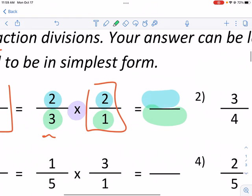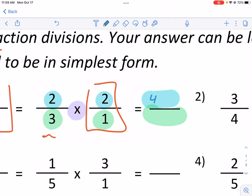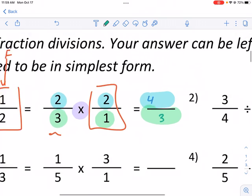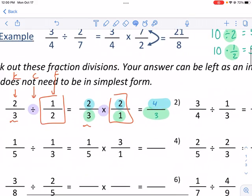So what that becomes is 2 times 2. Just trying to catch up on my colors here. 2 times 2 is 4. And then we have 3 times 1, which is simply 3. So my answer is going to be 4 thirds. And that's it. That's what you do.